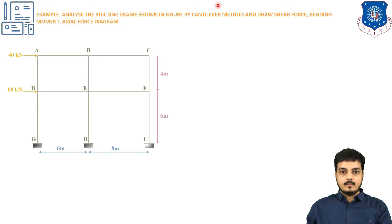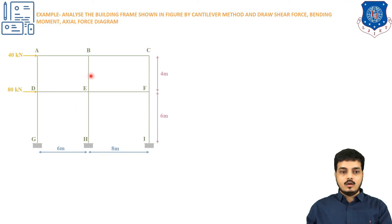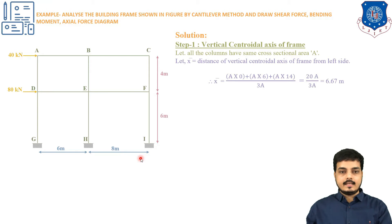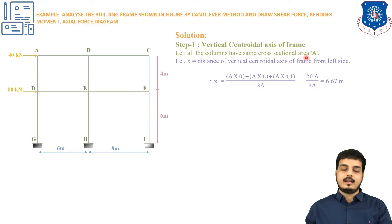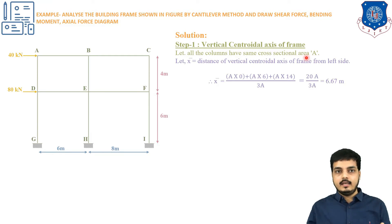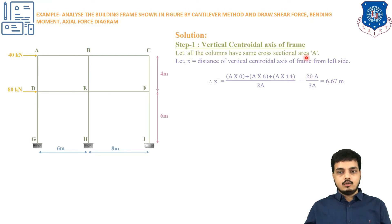Analyze the building frame shown in the figure by the cantilever method and draw the SFD, BMD, and axial force diagram. In this given figure, the heights and widths of the bays are different. The method works on the centroidal axis of the particular column. Since the area of the column is not mentioned, we take all columns as having the same cross-sectional area A.